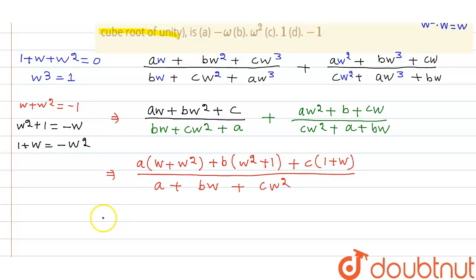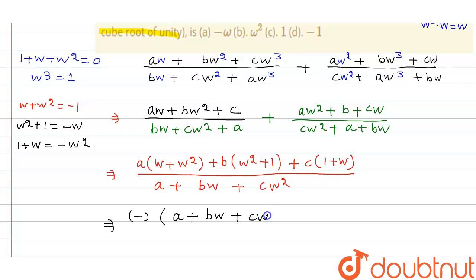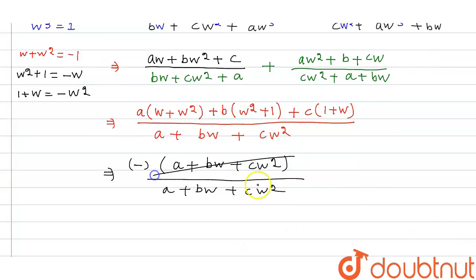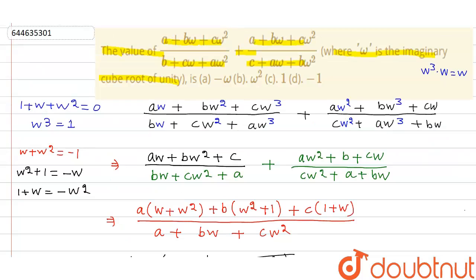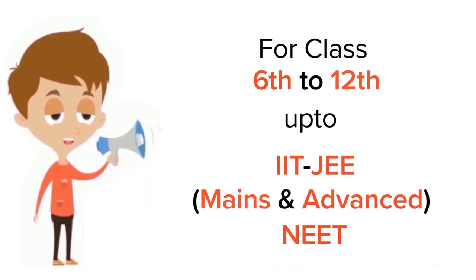Taking out the common factor of minus one, the numerator becomes -(a + bω + cω²) and the denominator is (a + bω + cω²). These cancel out, giving us -1. So the correct answer is option D, which is equal to -1.